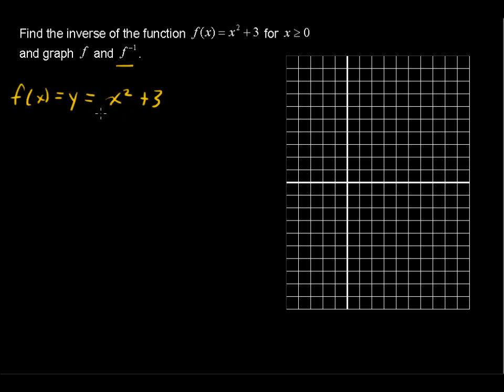The next step for finding the inverse is to solve for x, so we'll subtract 3 from each side and say y minus 3 equals x squared.